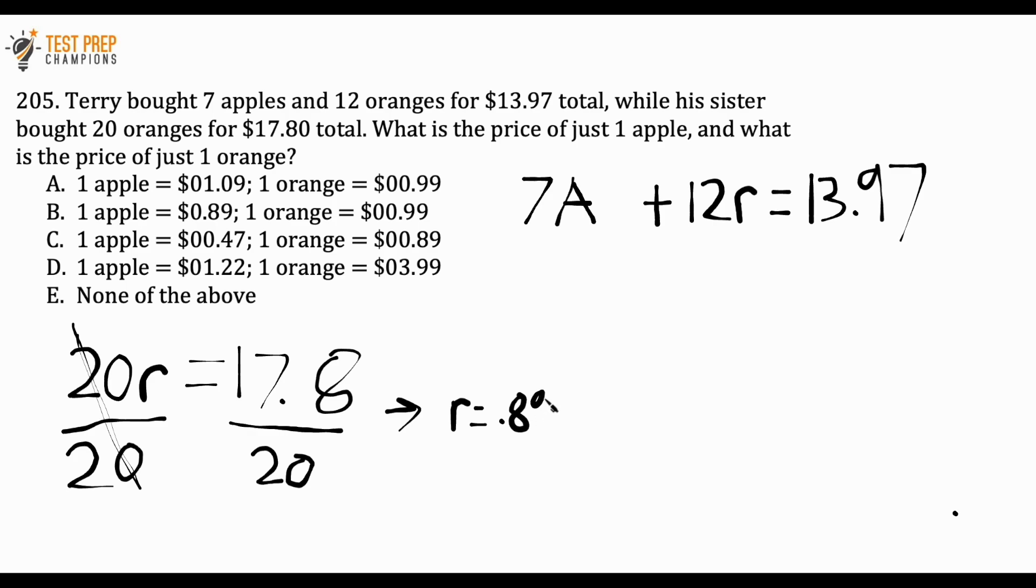What does that tell us? That can help us get the price for each apple. Because what I'm going to do is come back to this first equation, the 7A plus 12R, and I'm going to take this 0.89 and substitute it into this equation for R. I'm going to rewrite this: 7A plus 12 times 0.89 equals 13.97.